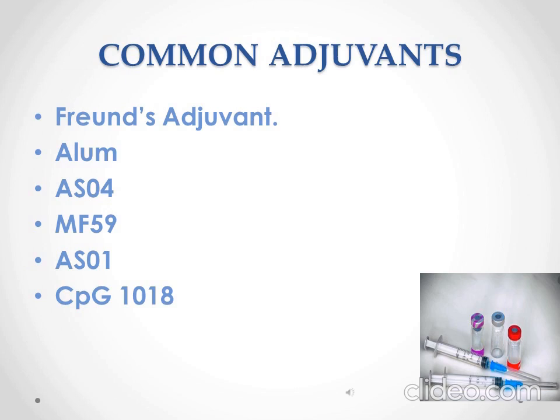ALUM — aluminum-containing adjuvants — are vaccine ingredients that have been used in vaccines since the 1930s. The most commonly used vaccine adjuvant, ALUM, consists of aluminum salts that are not soluble in water. It is included in numerous vaccines, including those that prevent hepatitis B and human papillomavirus. AS04, which began use in 2009, is based on monophosphoryl lipid A.